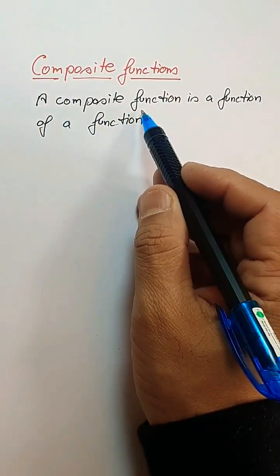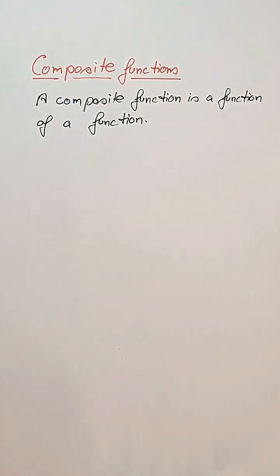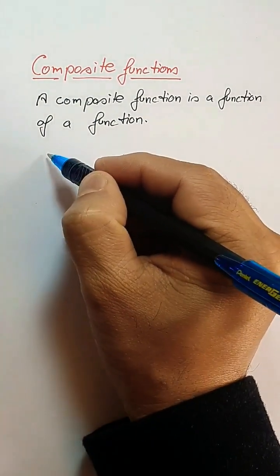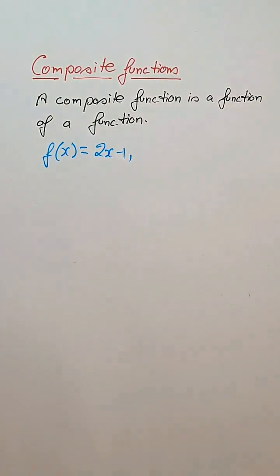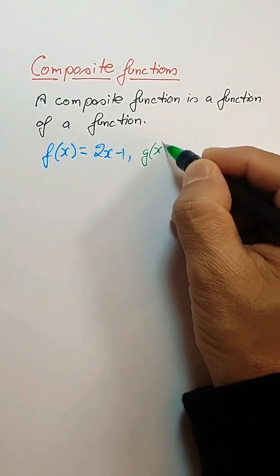A composite function is a function of a function. If you consider the function f equals 2x minus 1 and the other function g(x) as 3x minus 2.